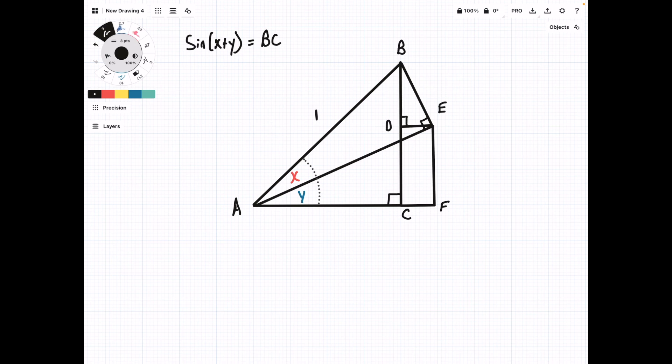But we can see that BC is made up of two smaller sections, BD and DC. So this is going to be sine of X plus Y is equal to BD plus DC. And now our whole goal is to figure out what these two lengths are, BD and DC.